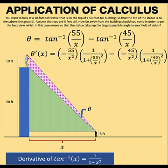So let's find theta prime of x. That is equal to the derivative of this first term minus the derivative of the second term. Now, inverse tangent of 55 over x is a composite function composed of the inverse tangent function as our outer function and 55 over x as our inner function. And therefore, we are going to use the chain rule of differentiation.